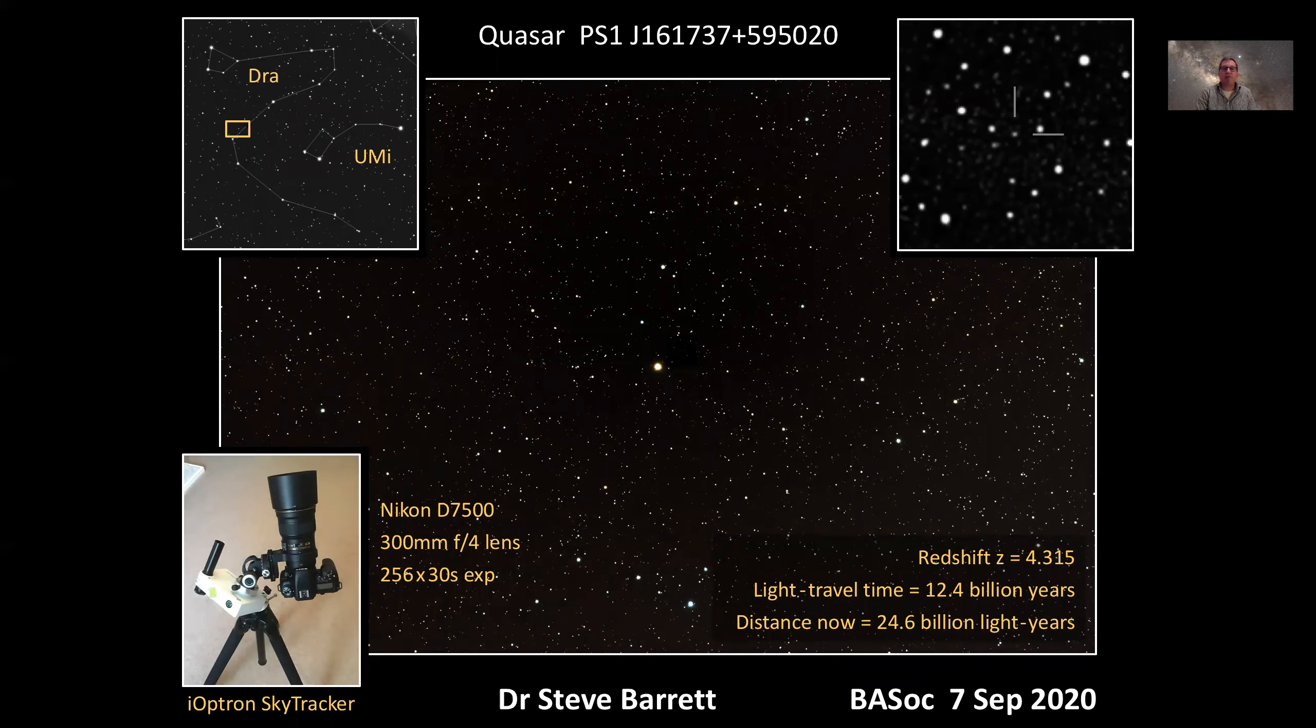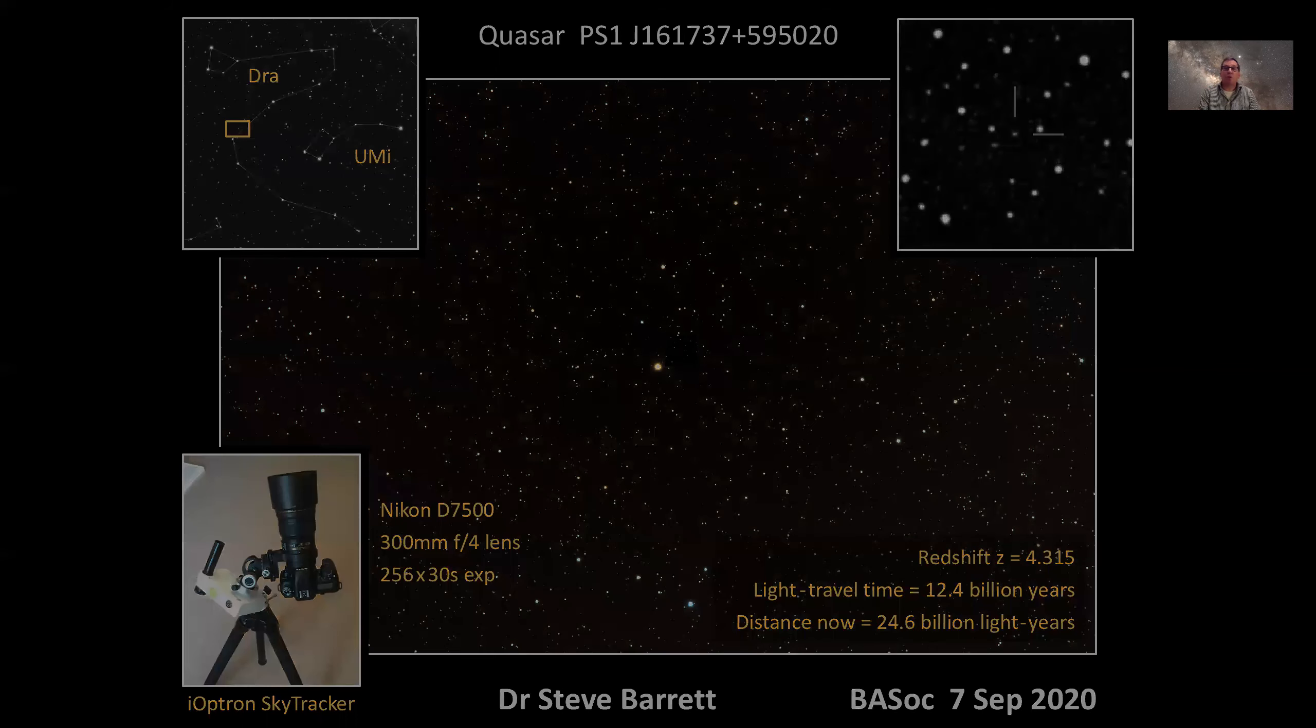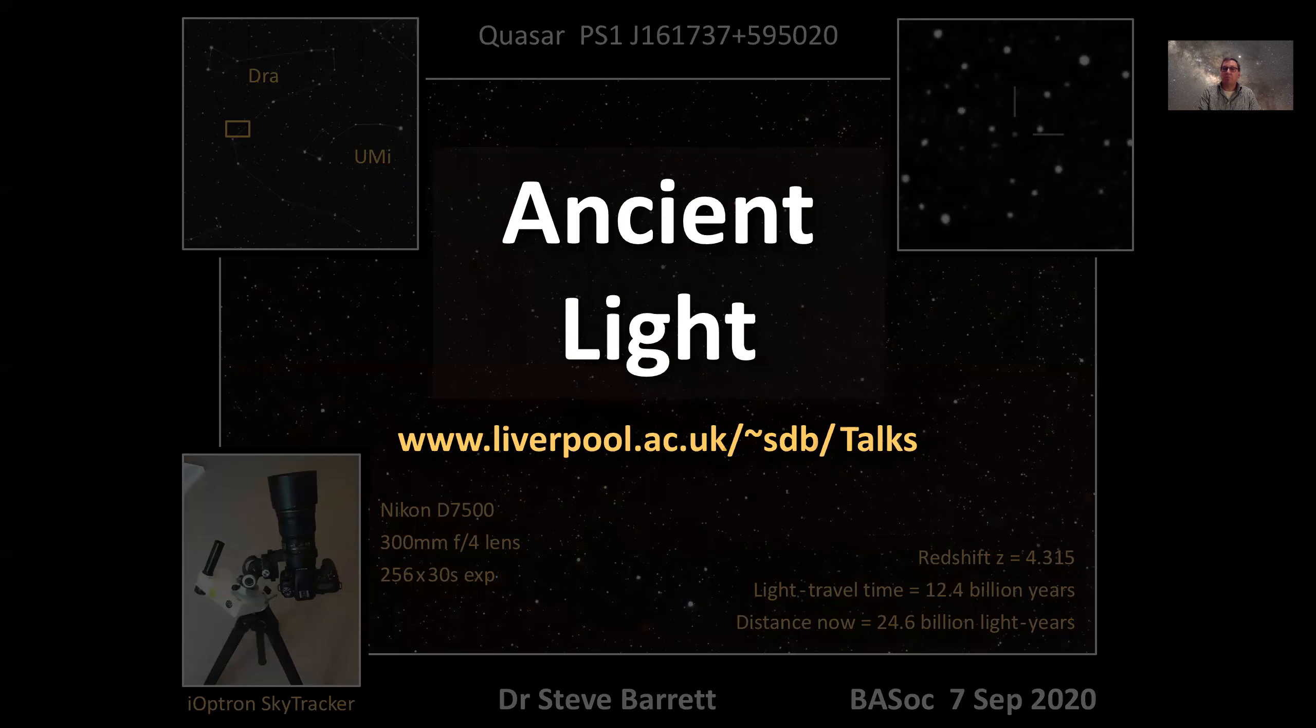Here's a visual summary of what I've been saying. The main image is the full image of the Barrett deep field with the fifth magnitude star in the center. In the bottom left we've got the camera on the tracker that I used. The top left shows you where I pointed the camera in the constellation of Draco and the inset in the top right shows you where the quasar is. Just a pixel or so, but the light that produced that pixel had an amazing journey. And the camera was capable of producing what I like to think of as the quasar's ancient light. Thank you all very much.